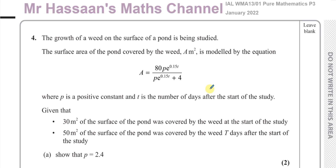Given that 30 meters squared of the surface of the pond was covered by the weed at the start of the study, and 50 meters squared of the surface of the pond was covered by the weed T days after the start of the study, show that P is equal to 2.4.